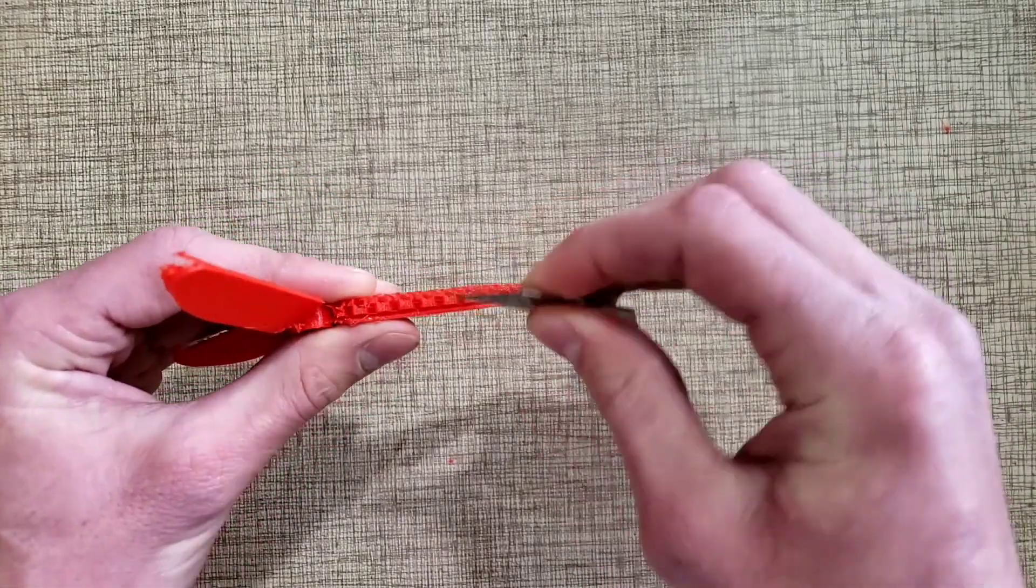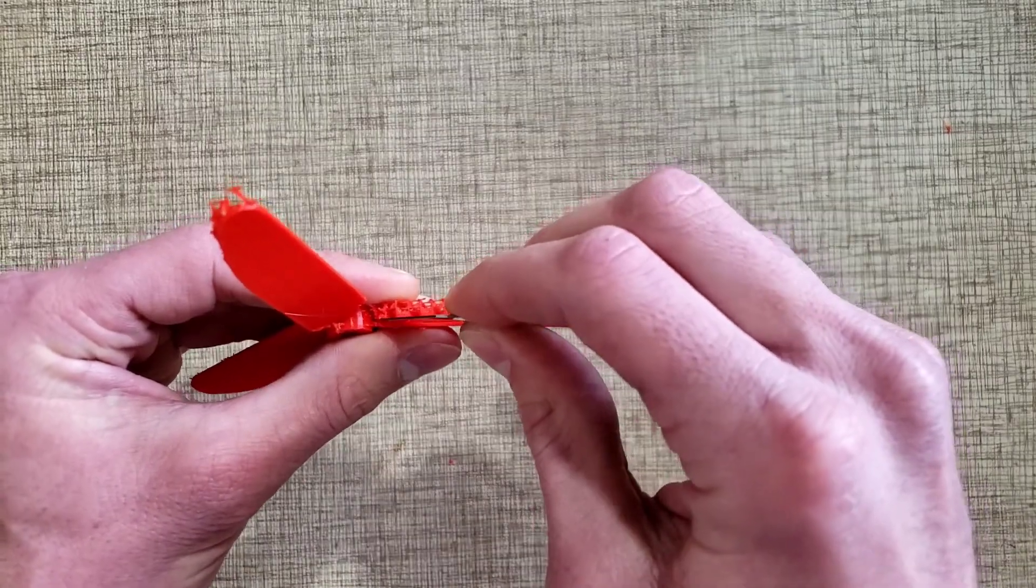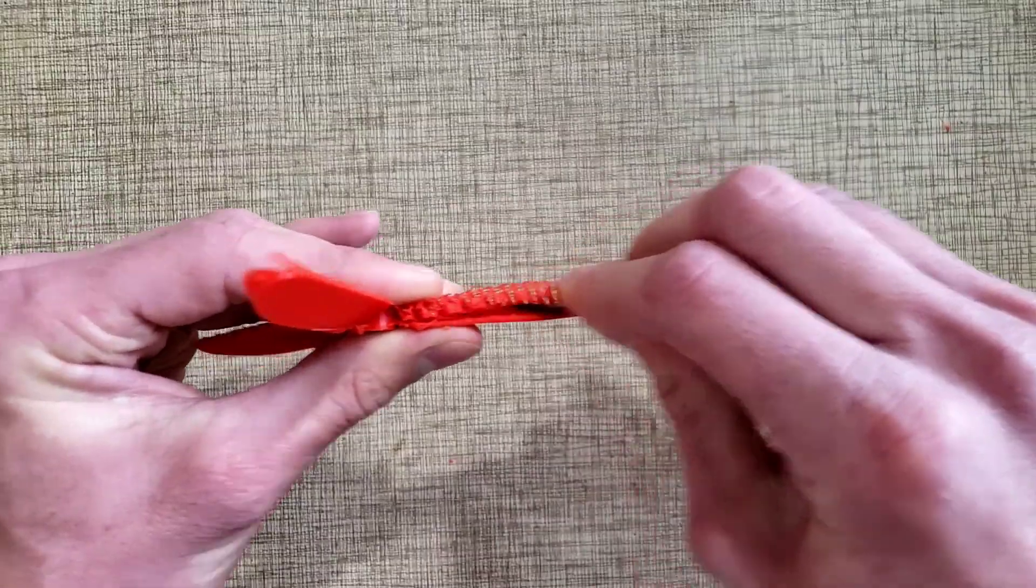You just stick it in between the surface of the print and the supports and you just kind of slice it. You can do it a few times, be very careful.